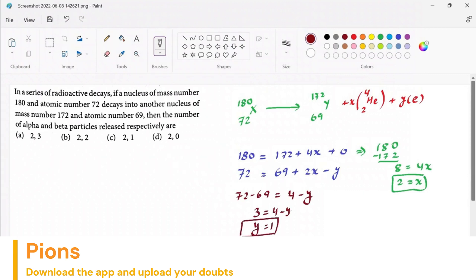So correct answer is x is 2 and y is 1. X is 2 means two alpha particles and one beta particle is emitted in this reaction.